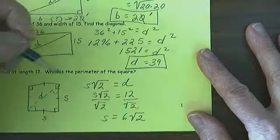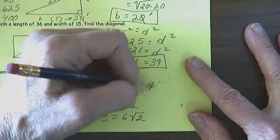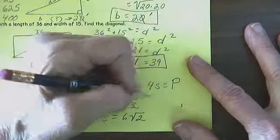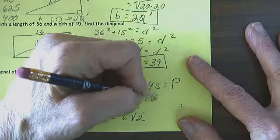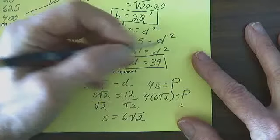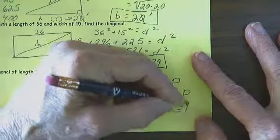Am I done? No. I needed the perimeter. 4 times the side length is equal to the perimeter. 24 times the square root of 2 is equal to the perimeter. 24 times the square root of 2 is equal to p.